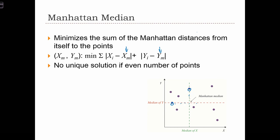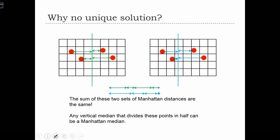But when the data set is even, there is no unique solution to minimizing this sum. For example, observe this data set with four locations. And we are trying to find the Manhattan median, at least in the x dimension, the x dimension of the Manhattan median that minimizes the sum of distances, of Manhattan distances to the median line.